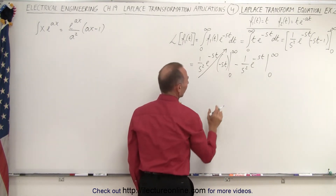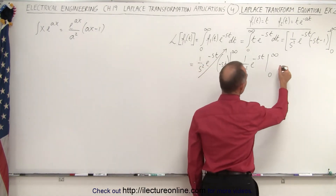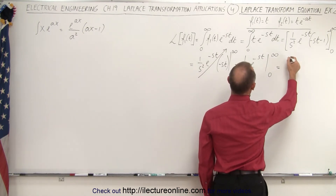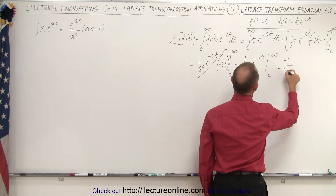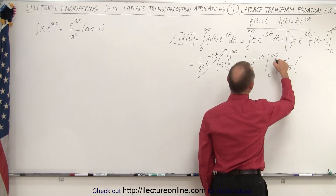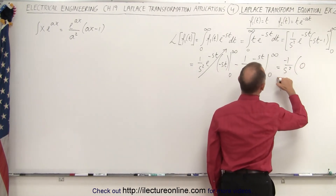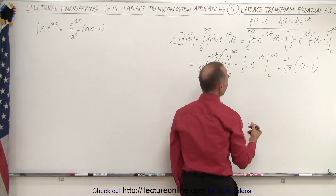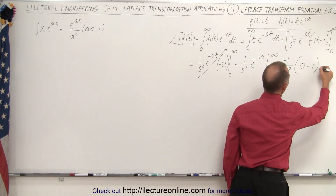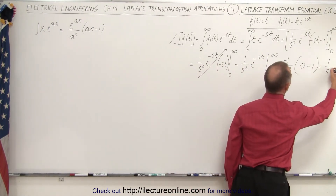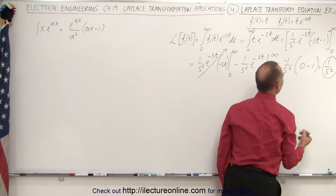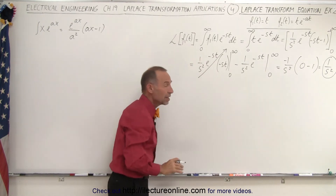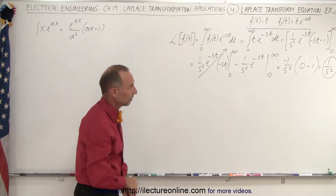So when we plug in the upper limit, we get zero, and when we plug in the lower limit, we also get zero — so that first term cancels out entirely. We're left with minus one over s squared times the quantity zero minus one, which gives us a positive one over s squared. The Laplace transform of f of t equals t is simply one over s squared.